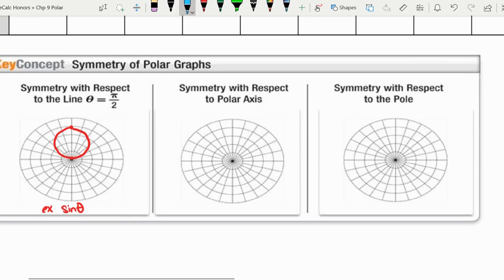This graph would have symmetry with respect to the line pi over two, which is this line right here, like where our y-axis would be.